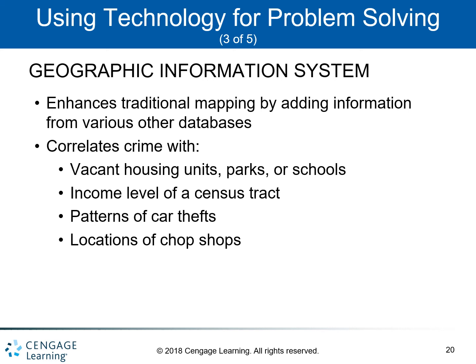GIS correlates crime with vacant housing units, parks, or schools. It looks at the income level of a particular census tract and also looks at patterns of car thefts and locations of chop shops, among other applications.